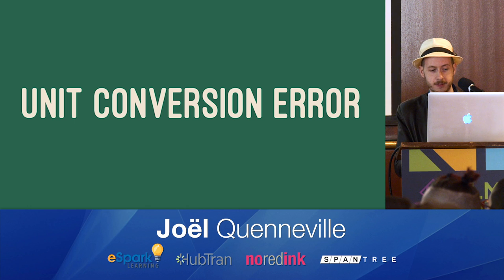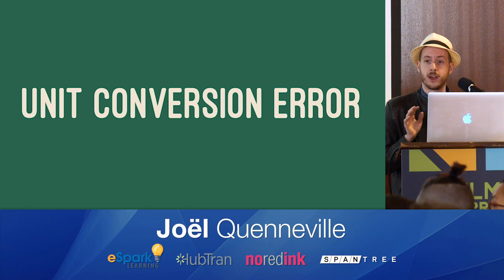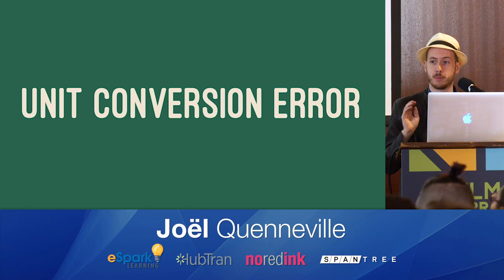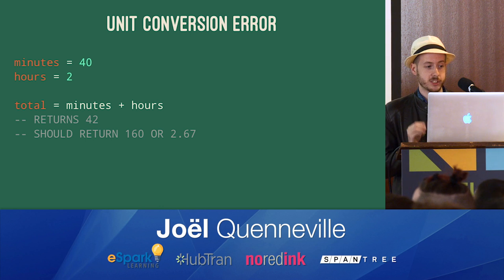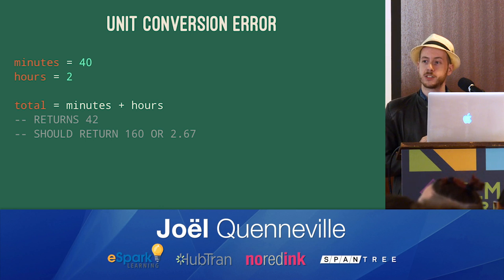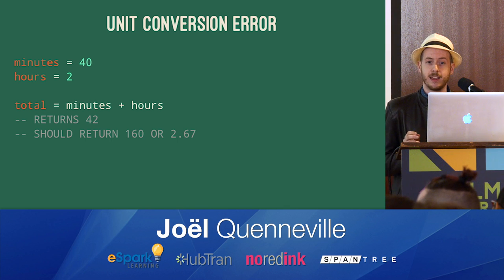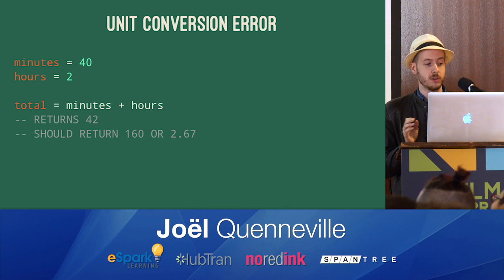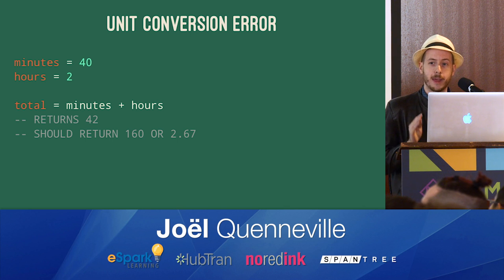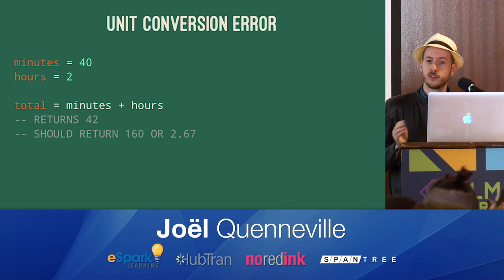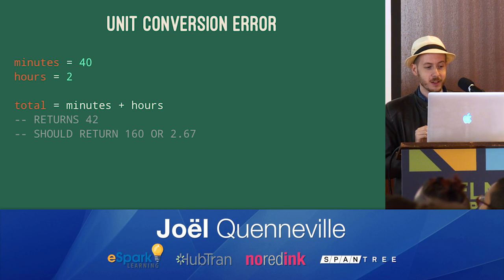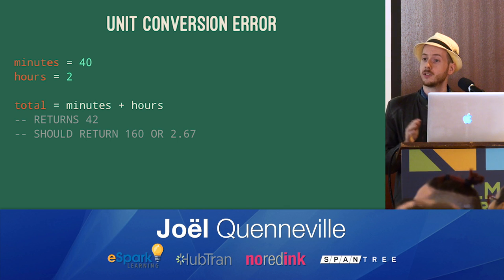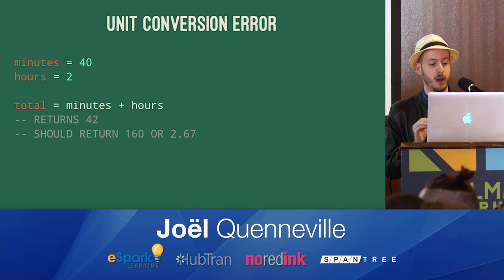What about unit conversions? This is the kind of error that we saw with the Mars Climate Orbiter. Let's look at a simpler problem. We have 40 minutes and two hours and want to add the two together. If we do the naive thing and say 40 plus two, we're going to get 42 back. And while that may be the answer to life, the universe, and everything, it is not the right answer here.